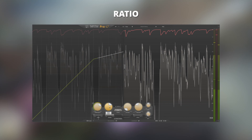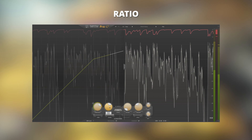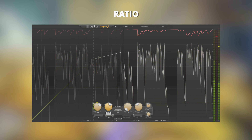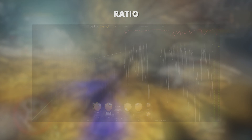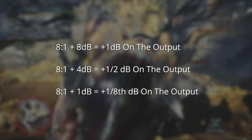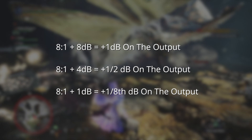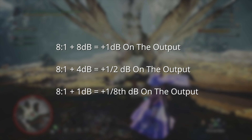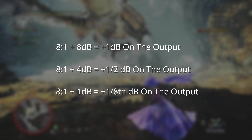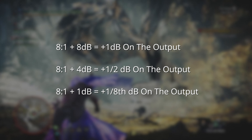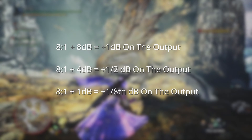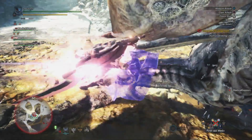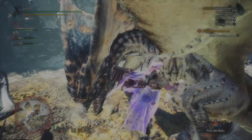The ratio gets a little mathy, but it's a really easy concept to grasp. Setting a ratio tells the compressor how much of the signal you want to attenuate when it passes the threshold. A ratio of 2:1 will divide the signal by half; a ratio of 4:1 will divide it by a quarter. So if we have a setting of 8:1 and our signal goes above the threshold by 8 dB, we'll see 1 dB on the output. If our signal goes over by 4 dB, we'll see about half a dB on the output, and if it goes over by 1 dB, we'll only see an eighth of a dB on the output.